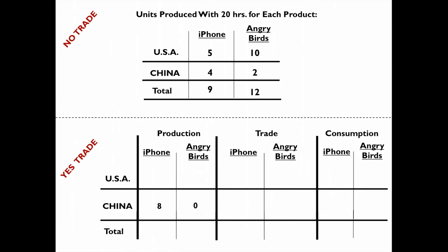I'll start with China. China is going to specialize completely in iPhones — producing all iPhones and no Angry Birds. China has 8. The number I'm looking for is 11, because I want the two countries to produce 11 together, which is 2 more than 9. That way I can give one extra to China and one to the US, so China ends up consuming 5 and the US ends up consuming 6. Since China produces 8, I need 3 more to reach 11, so the US needs to produce at least 3 iPhones. If the US produces 3 iPhones, they will have enough hours left to produce 14 Angry Birds.